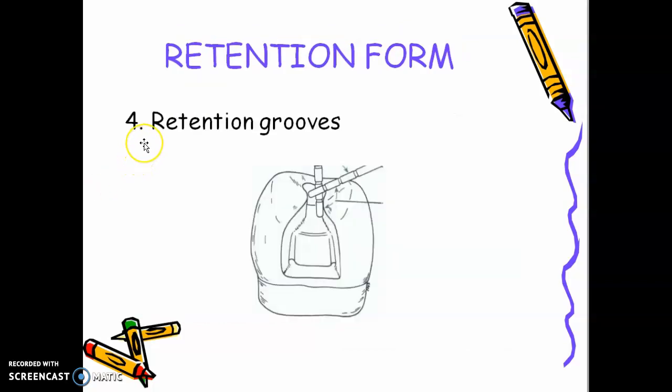Number four is retention groove. So especially in class 2 cavities, it's not enough that you have converging buccal and lingual walls since the area in the marginal ridge is a stress-bearing area. So to add retention to your restoration, you add retention grooves here. The retention grooves start from buccoaxiogingival point angle going to the axiopulpal line angle.